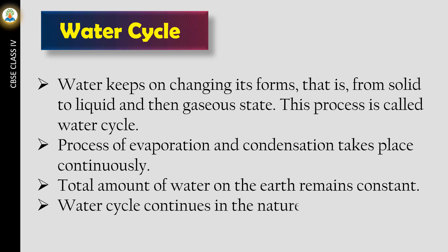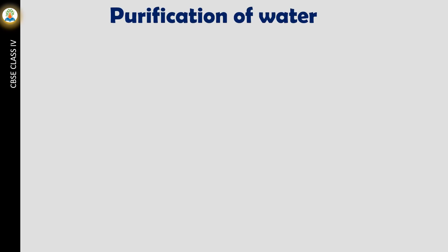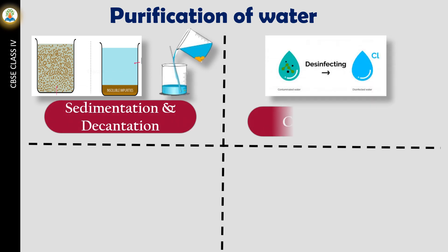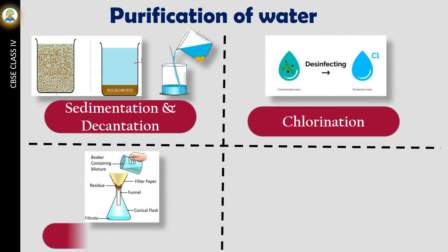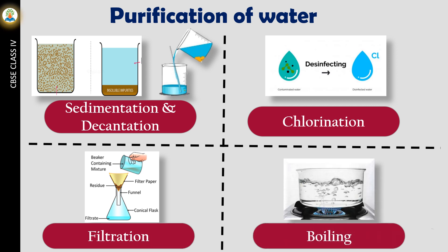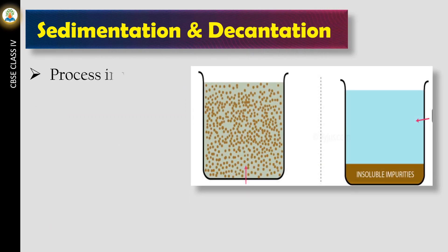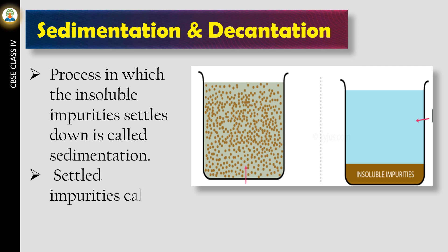The water that is available in rivers, ponds, and lakes contains different types of impurities. It is necessary to purify water before drinking. Purification of water is done in the following ways. The process in which the insoluble impurities settle down is called sedimentation. Settled impurities are called sediments.